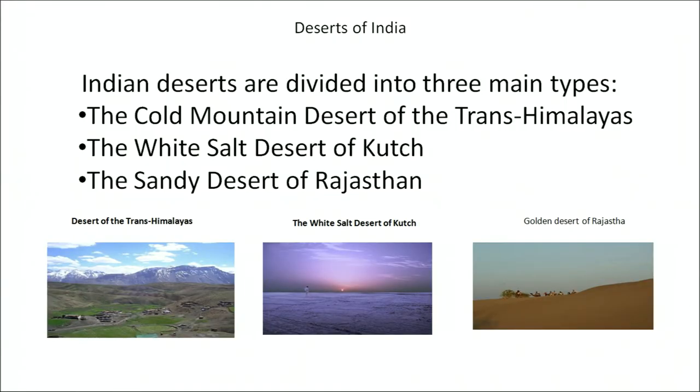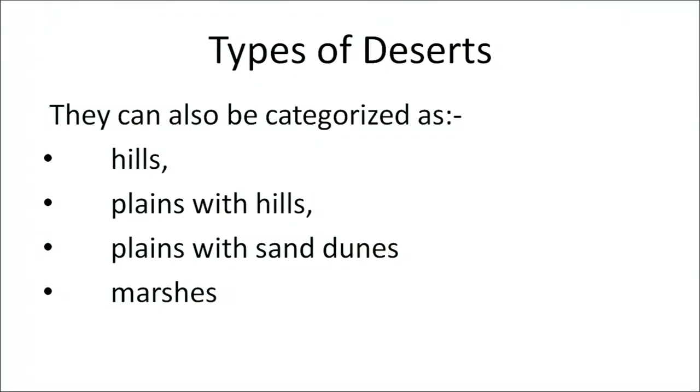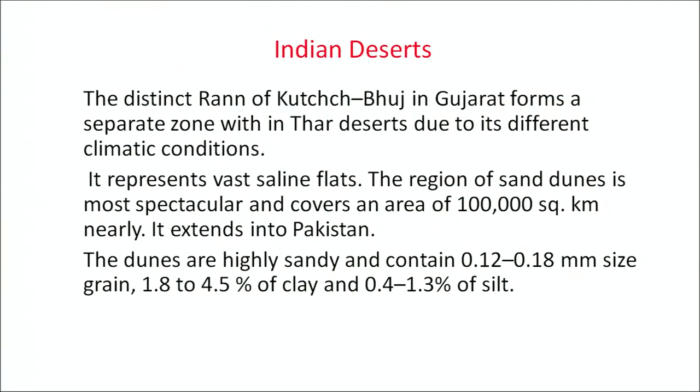Indian deserts are divided into three main types: the cold mountain deserts of Trans-Himalayas, the white salt deserts of Kutch, and the sandy deserts of Rajasthan. These deserts can also be classified on the basis of their location: hills, plains with hills, plains with sand dunes, and marshes. The Rann of Kutch in Gujarat forms a separate zone within the Thar Desert due to its differentiation of climatic conditions, representing vast saline flats.